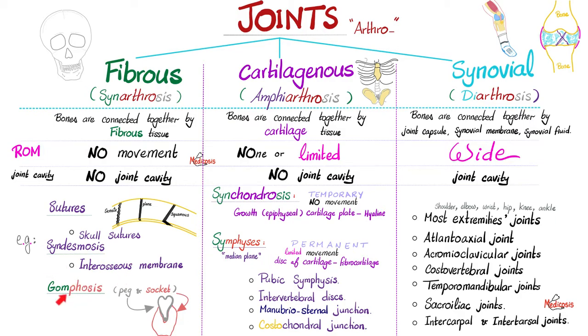Third is gomphosis. Remember gum — it's the peg-and-socket joint of your teeth. Between them you'll find a fibrous ligament, hence a fibrous joint.